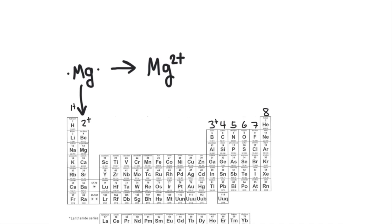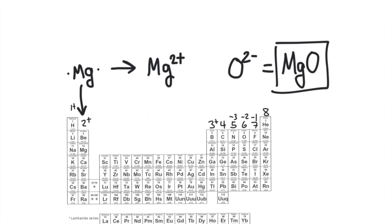Starting from the right side of the periodic table, group 8 will not react, so they will not have a charge. Group 7 will gain 1 electron, so everything in group 7 will have a negative 1 charge. Group 6 will gain 2 electrons, so everything in group 6 will have a 2 minus charge. Group 5 will gain 3 electrons, so everything in group 5 will have a 3 negative charge. When magnesium and oxygen react, magnesium has a 2 plus charge and oxygen has a 2 minus charge. Adding 2 plus and 2 minus gives 0, so I only need 1 of each element. The chemical formula is MgO.